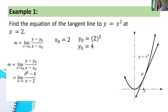We substituted x² for y and 4 for y₀, giving x² minus 4, and x minus 2 in the denominator. Now, if we notice, we'll get an indeterminate form. When we take the limit of the numerator as x approaches 2, it equals 0.